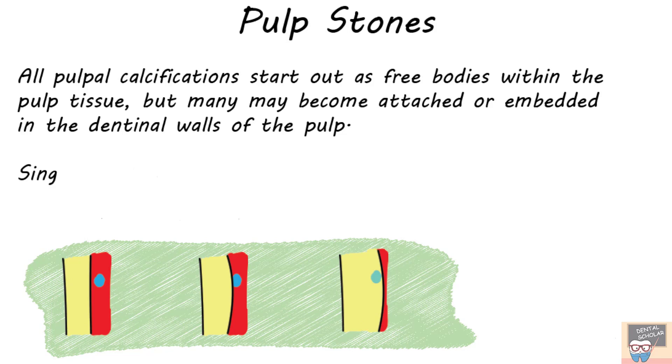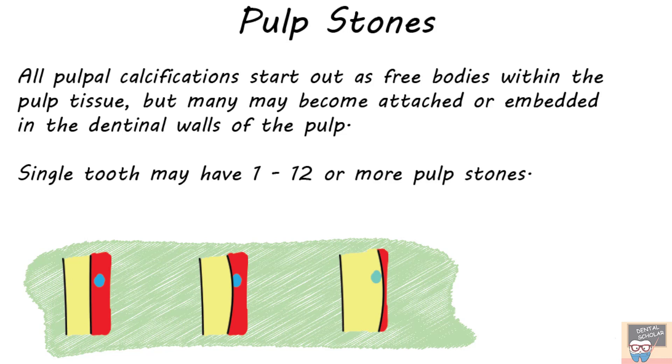A single tooth may have 1 to 12 or even more pulp stones. Pulp stones are more common in the coronal pulp chamber as compared to the radicular pulp.